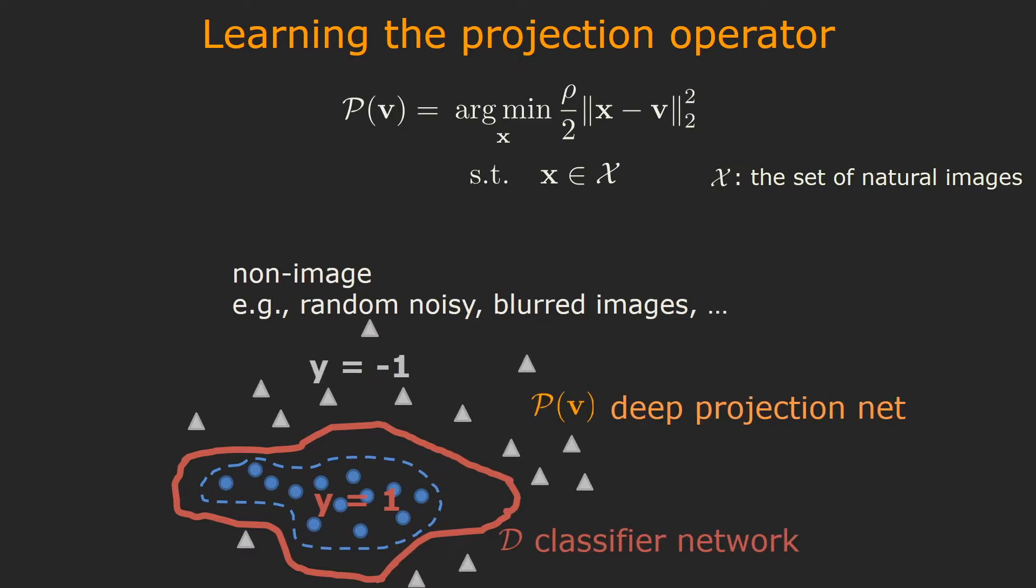Since the projected images will gradually approach the true natural image set during the training process, we use the projected images as the negative examples to train the classifier to refine its decision boundary. This is similar to adversarial learning, a concept that is widely used today in training generative neural networks. Please see the paper for more details.